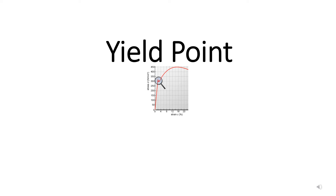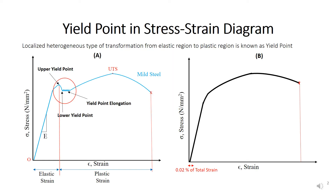In this lecture, we will study about the yield point. We will figure out the location of the yield point in the stress and strain diagram, and we will also study the reasons behind the occurrence of the yield point. The yield point is defined as a point in the stress and strain diagram beyond which the material transforms itself from the elastic region to the plastic region — meaning beyond the yield point, permanent deformation in the material starts.